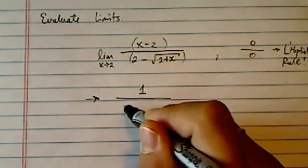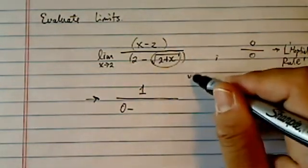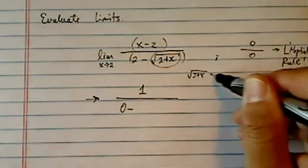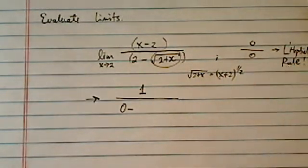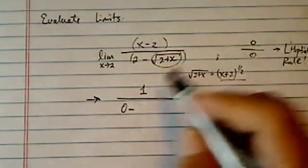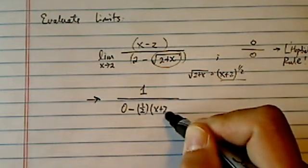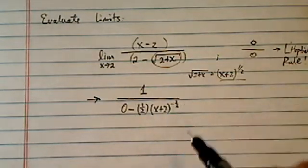On the bottom here, we have a zero minus, and this chunk, I'm going to write it into the exponential form to make it a little easier for myself to take the derivative. Derivative of this one, I'm going to use the power rule, which is a half. Then x plus two, minus half.